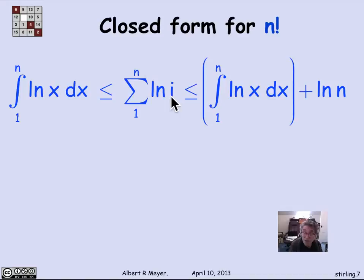Well, what that tells us then is that the sum from 1 to n of log of i, which is what we're interested in, is bracketed between the integral from 1 to n of log x and the integral from 1 to n, well, it's plus log of 1, but that's 0, and the integral from 1 to n of log of x plus the last term, which is log of n.